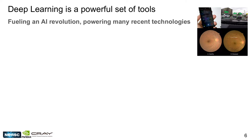Deep learning is a very powerful set of tools for solving problems. We are in the middle of what you might call an AI revolution, driven largely by the rise of deep learning. AI and deep learning are transforming big tech companies and working their way into many recent technologies we interact with daily — like how our phones understand speech, how we search the internet, self-driving cars, healthcare applications, and even arts and games.